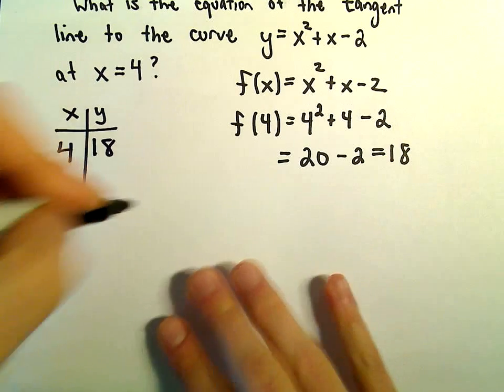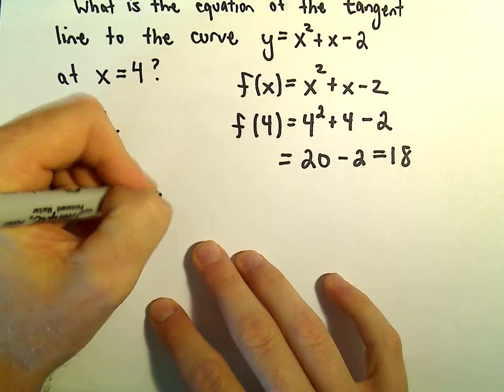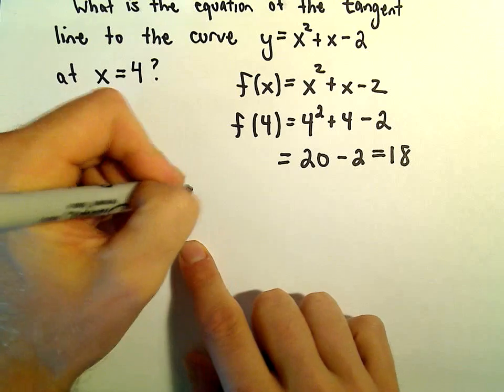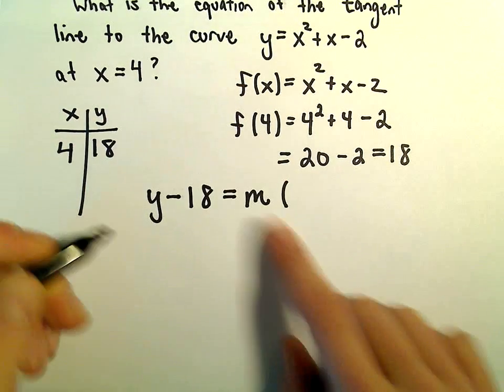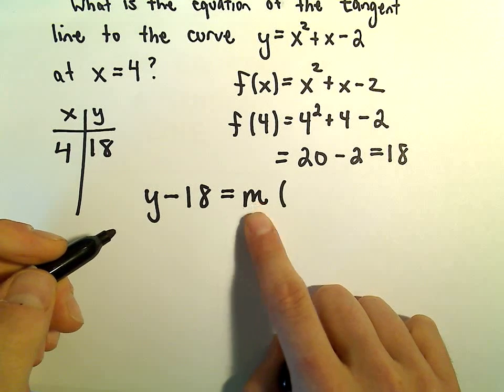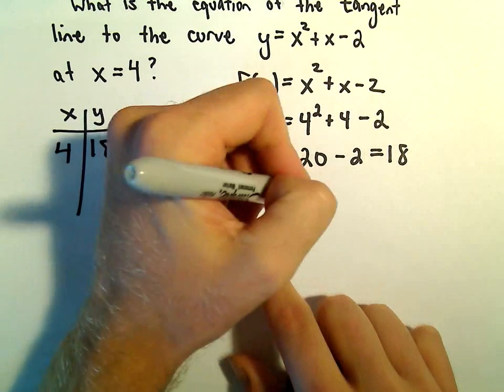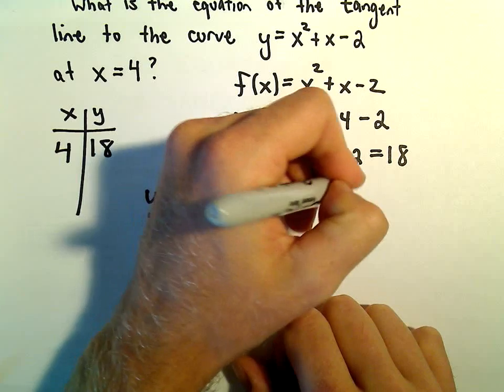All right, so if we use a point-slope formula, I know the equation of the line is going to be y minus the y-coordinate, which is 18. That's going to equal the slope, which we don't know. We'll have to use the derivative to find the slope of the tangent line. And then we have x minus 4.